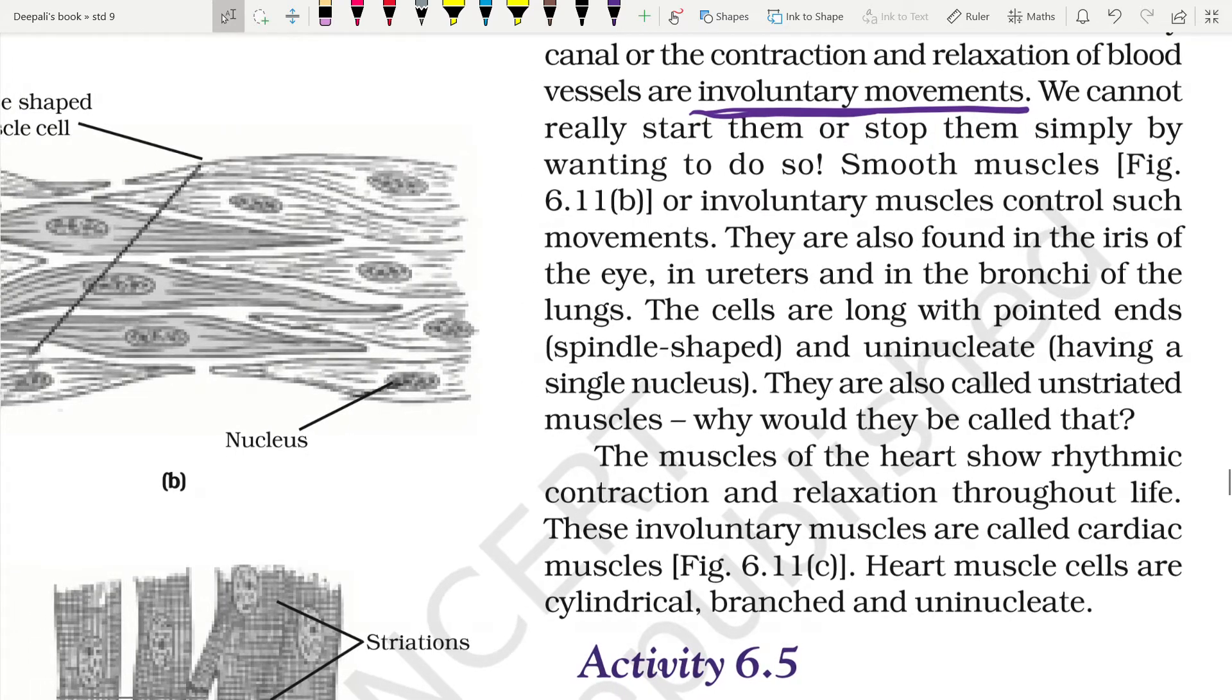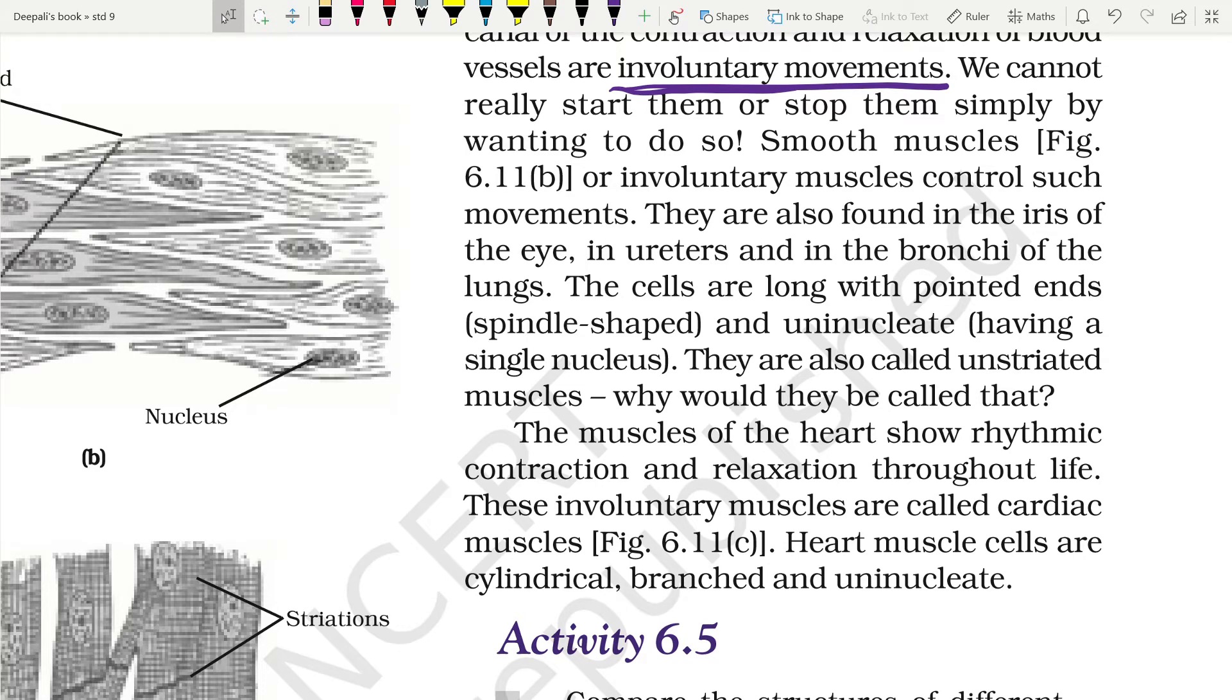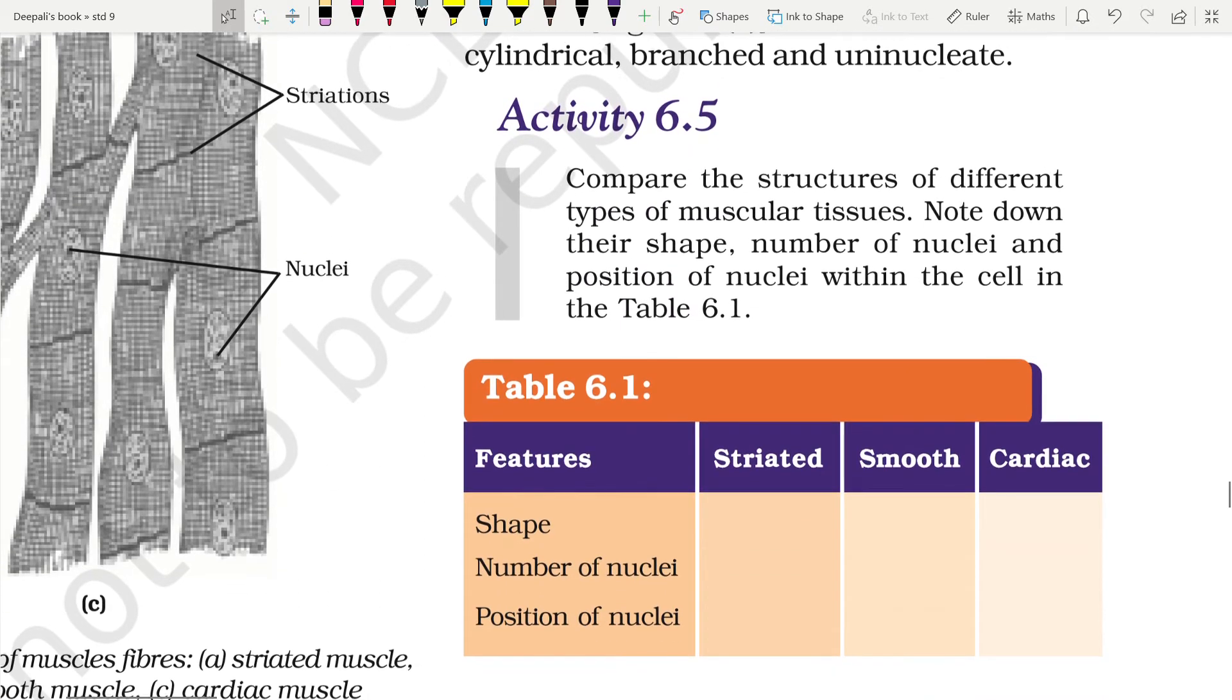They are also called unstriated muscles because there are no dark or light bands. The muscles of the heart show rhythmic contraction and relaxation throughout their life. They are involuntary muscles called cardiac muscles. Heart muscle cells are cylindrical, branched, and uninucleated. So compare the structure of different types of muscular tissues. Note down their shape, number of nuclei, and position of nuclei within the cell in the table.